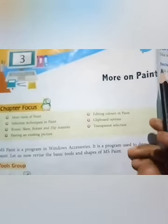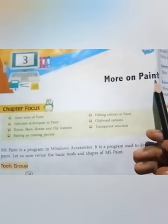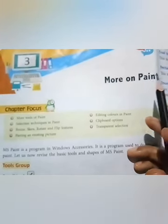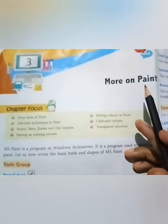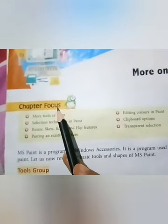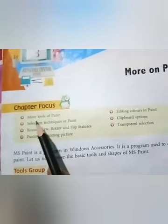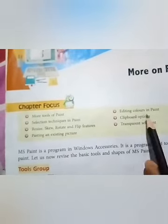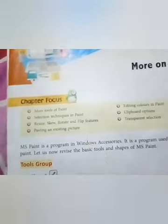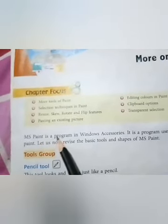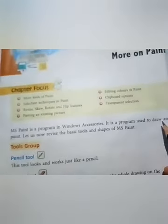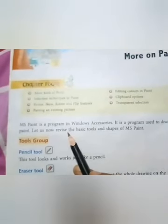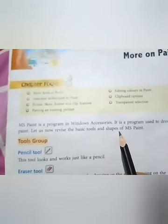We are all very familiar with the word paint because we all like to draw and paint. The same thing — painting — we can do on a computer. Now see the chapter focus. Chapter focus means the topics we will learn within this chapter. The first line: MS Paint is a program in Windows Accessories. It is a program used to draw and paint. Let us now revise the basic tools and shapes of MS Paint.